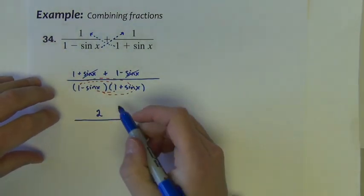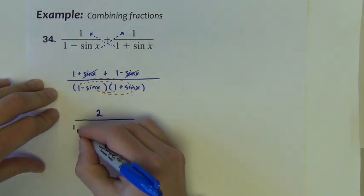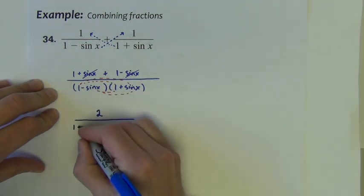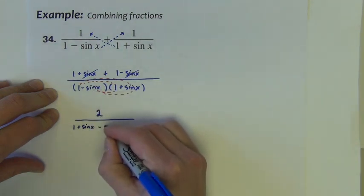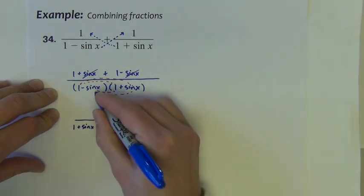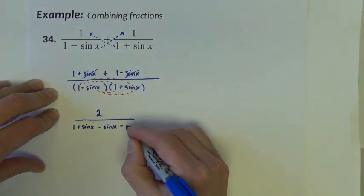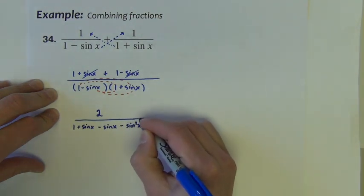So let's go ahead and just do all those steps. 1 times 1 is 1. 1 times sine is sine. Negative sine times 1 is negative sine.